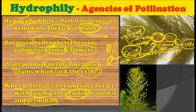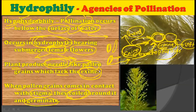You should remember carefully that in hypohydrophily, pollination occurs below the water surface. Secondly, it mostly occurs in hydrophytes where there are submerged female flowers. And in these plants the pollen grains are always needle-like and, very importantly, they lack the exine on their pollen grains so that the pollen grains germinate easily on the female flower. When pollen grains come in contact with the stigma, they coil around and start to germinate. This is how hypohydrophily occurs.